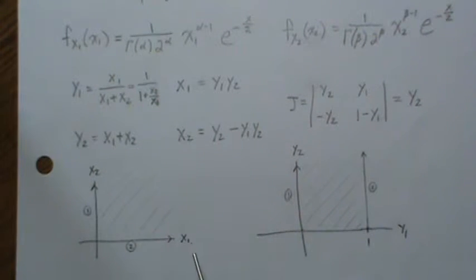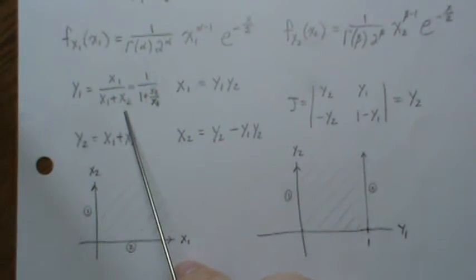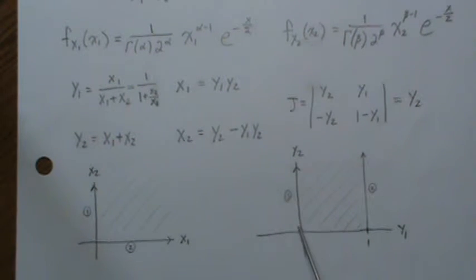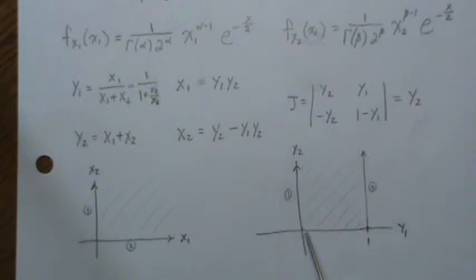And then here if Y1 is 0, 0, then Y1 is 0. So over here this border is mapped to this border. Y1 is 0 and Y2 gets to go from 0 to infinity, so that border goes to this one.